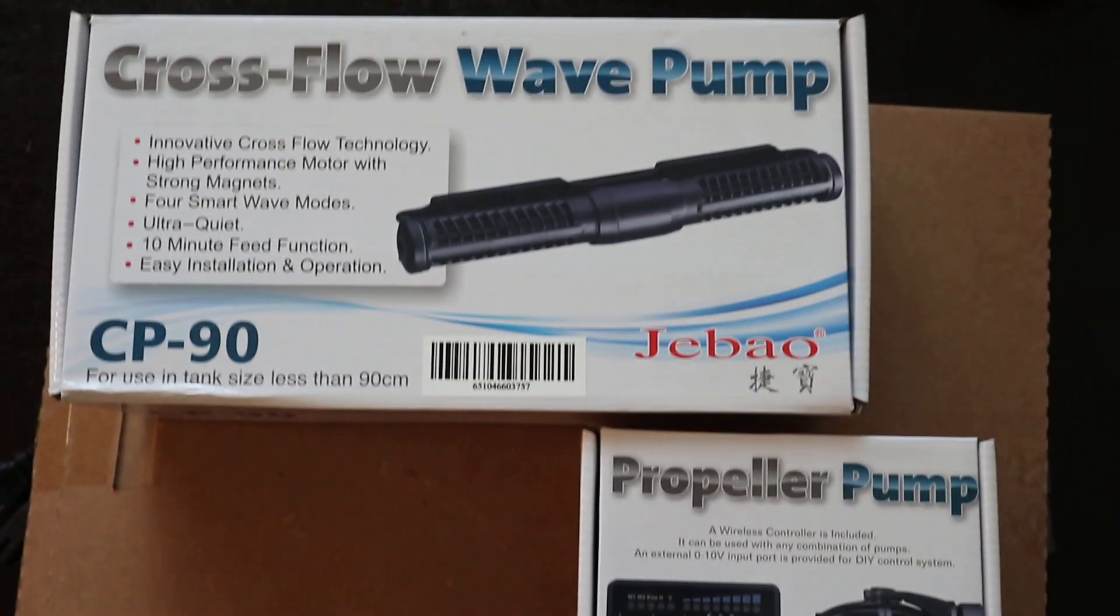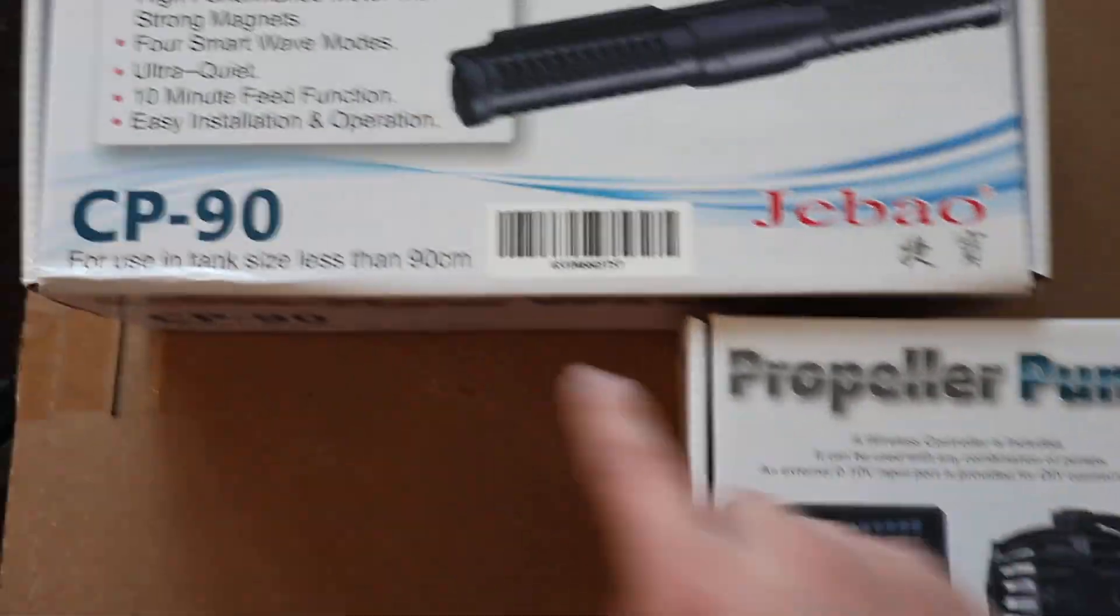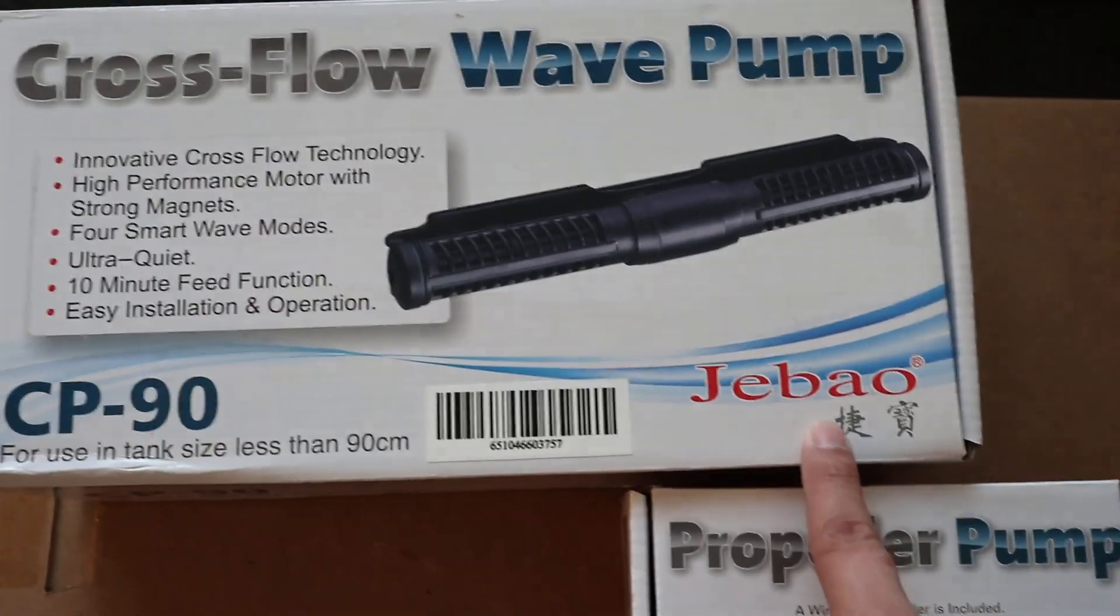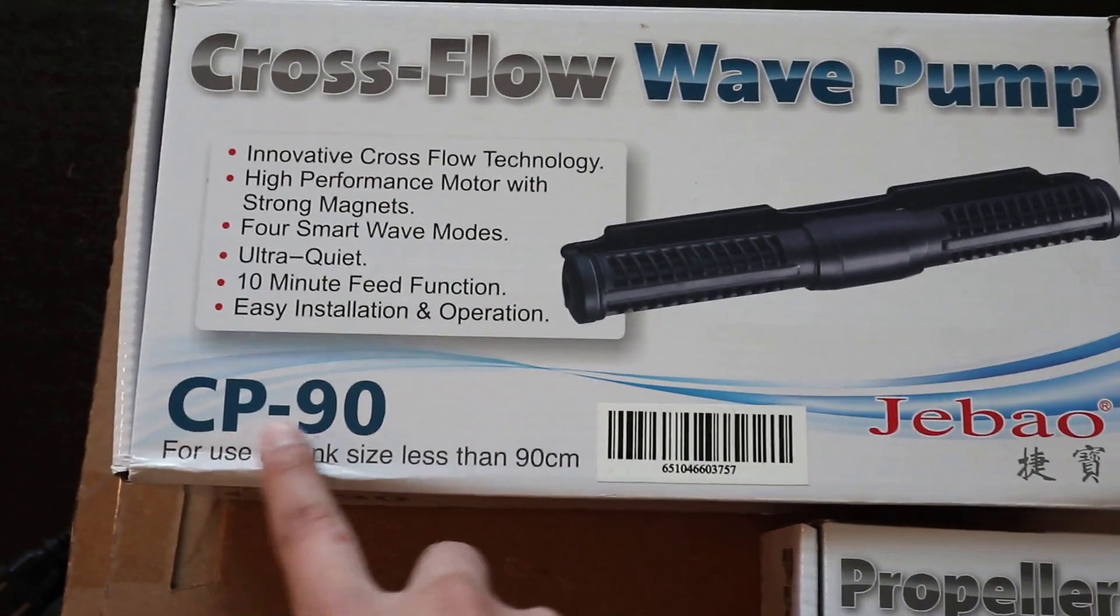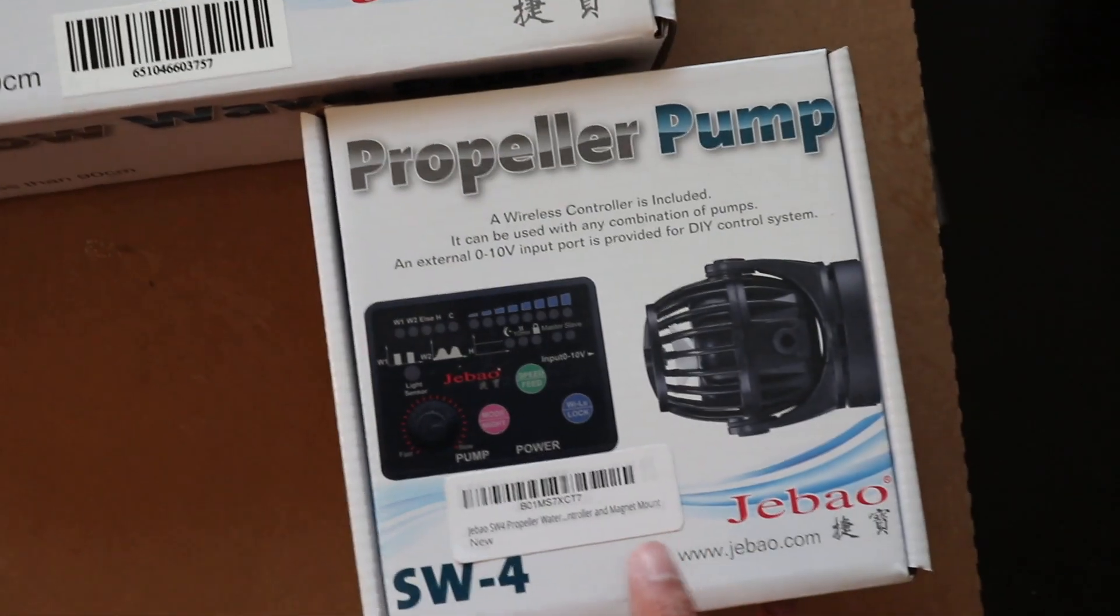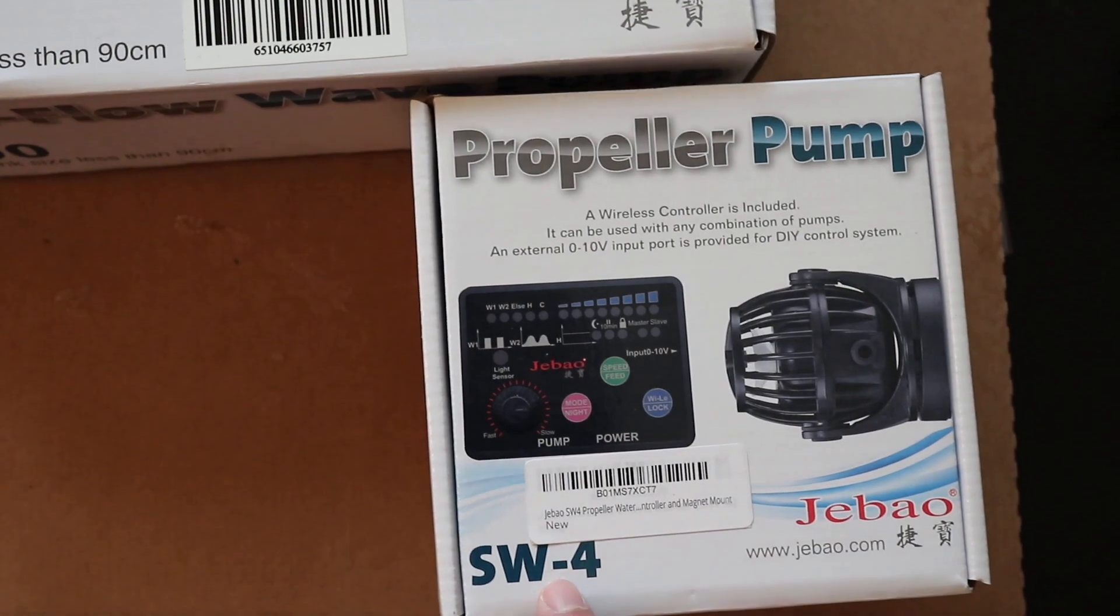This week we're going to work with the wave makers and plugging up everything. Let me show you what I'm working with. Now these are the two wave makers that I'm going with. They're both made by J-Bow, a Chinese company. This one's the CP90 and this one right here is very small, it's a SW-4.